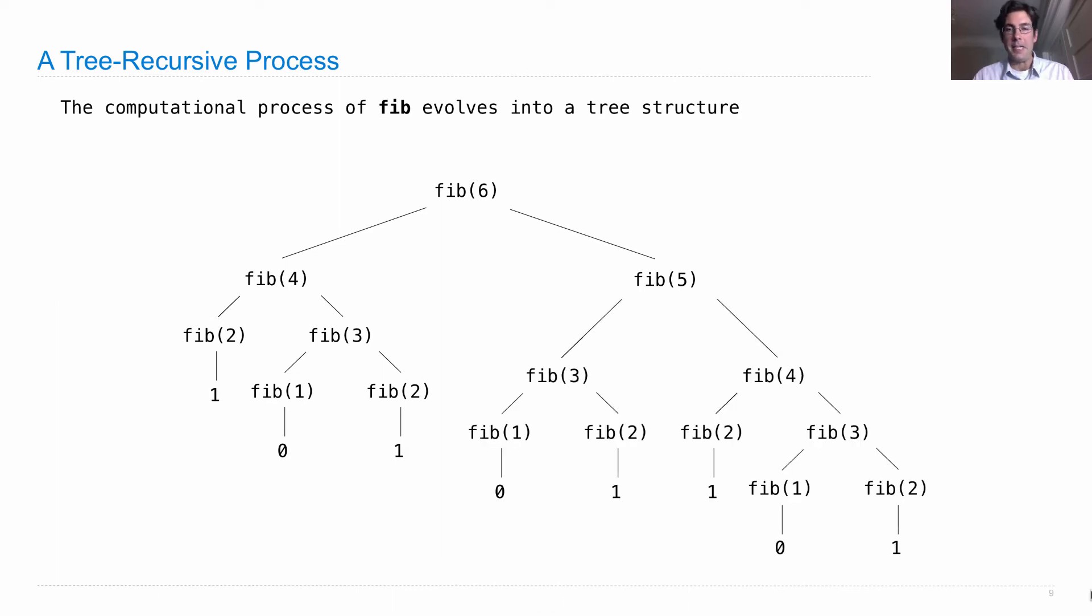And to compute fib(5), we build an even larger tree structure, where we sum fib(3) and fib(4). Computing fib(4), again, involves computing fib(2) and fib(3), etc. And then we sum together all these numbers in this tree-structured process in order to figure out that fib(6) is the number 5.